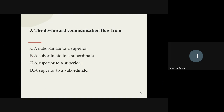Question number nine: downward communication flows from whom to whom? The options are a subordinate to a superior, a subordinate to subordinate, a superior to superior, and a superior to a subordinate. The answer is it can be done between a subordinate to a subordinate.